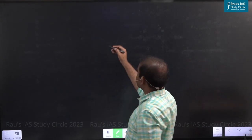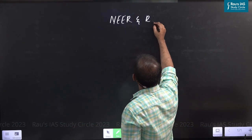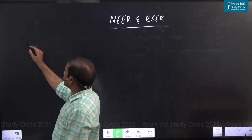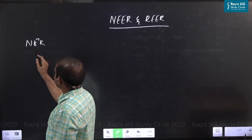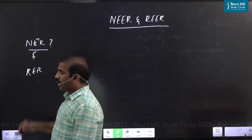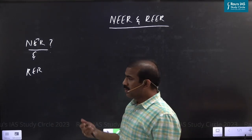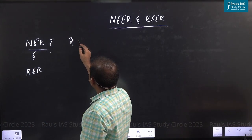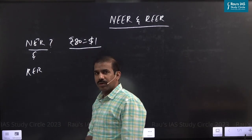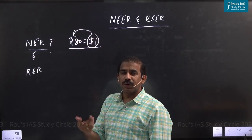Let's try to understand what is nominal effective exchange rate and real effective exchange rate. You might have come across the terms nominal exchange rate and real exchange rate. Nominal exchange rate refers to the value of a currency expressed in terms of another currency — the number of units of Indian currency we are willing to forego in return for one unit of foreign currency, in this case the American dollar. So how much a dollar costs in India — that current market value is what we call the nominal exchange rate.